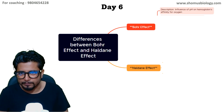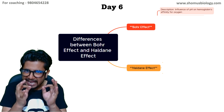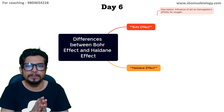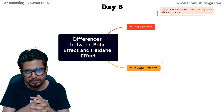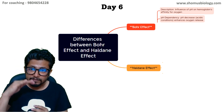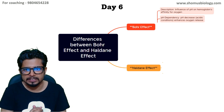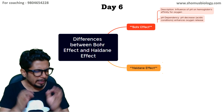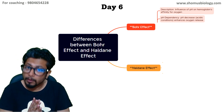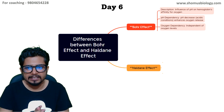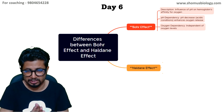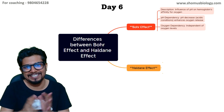In the Bohr effect, what is the description? It is the influence of pH on hemoglobin's affinity for oxygen — how exactly pH or a change in pH causes hemoglobin to either bind to or release oxygen. If the pH decreases, meaning in acidic conditions, it enhances oxygen release. In an acidic environment, hemoglobin tends to release oxygen more. Importantly, the Bohr effect is independent of oxygen level and does not depend on oxygen concentration — it depends on the pH or acidity of the environment.